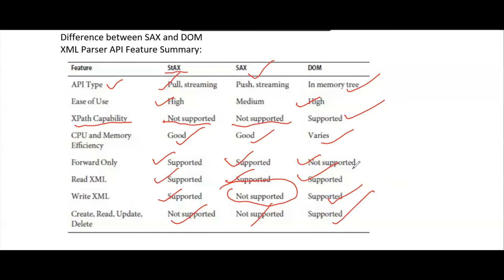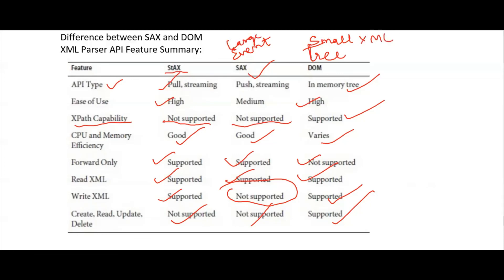Let us look at some more differences between SAX and DOM. DOM is a tree-based parsing method, whereas SAX is an event-based parsing method. DOM is used on small to medium XML documents, whereas SAX is used on large XML documents. Bidirectional navigation or traversal of the XML document is possible using DOM, whereas in SAX you cannot do bidirectional traversal — you can only go from top to bottom of the XML file.